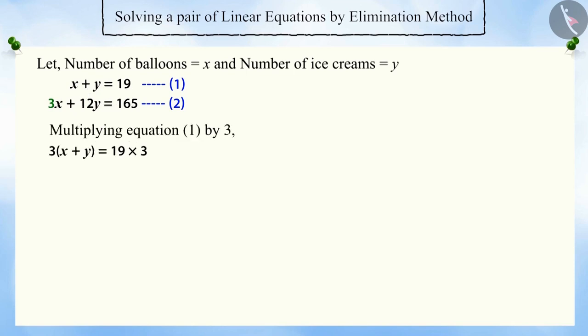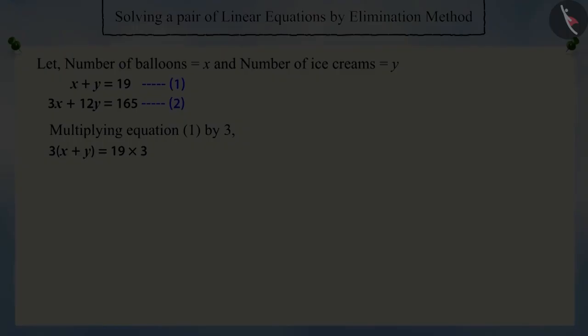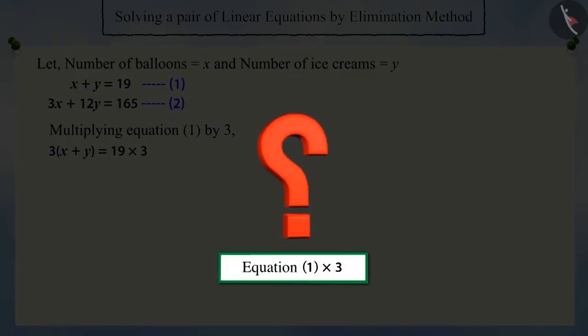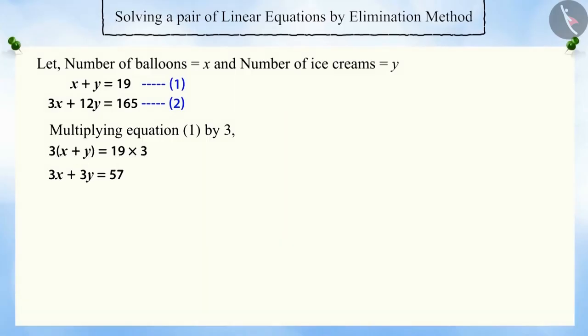Can you multiply equation 1 by 3? Excellent! After multiplying by 3, we get 3x plus 3y is equal to 57, which can be represented as equation 3.